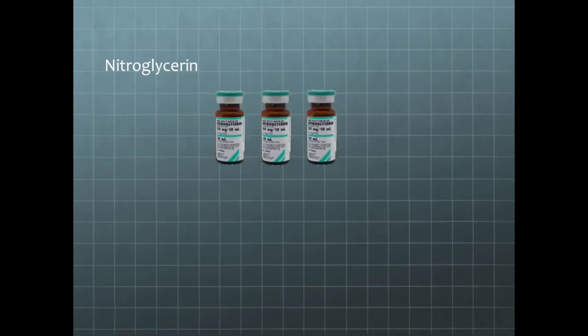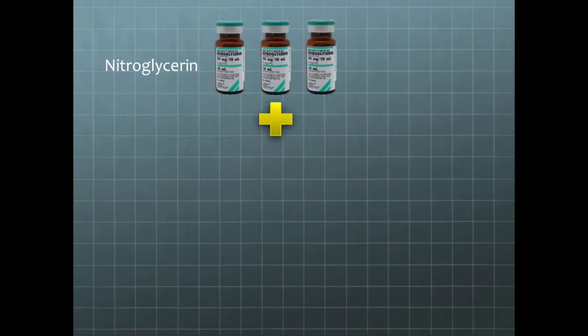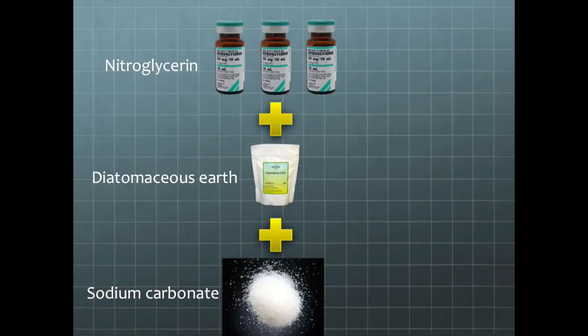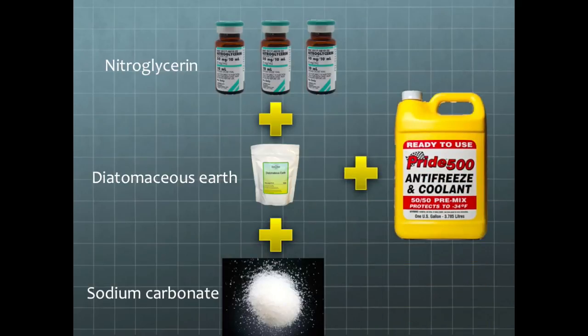Nobel's original composition of dynamite consisted of three parts of nitroglycerin, one part of diatomaceous earth as the absorbent, and a small admixture of sodium carbonate as a stabilizer. Ethylene glycol was later added to the nitroglycerin to lower its freezing point and keep it from freezing into a slush at lower temperatures.